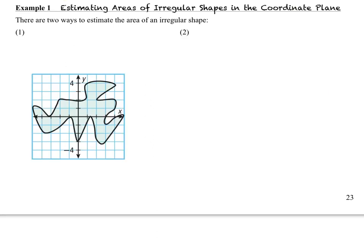In example number 1, we're trying to estimate the area of an irregular shape in the coordinate plane. And you can see that we've got this very odd-looking shape and what we want to be able to do is to figure out what the area is of that very irregular shape using the fact that it's on a coordinate plane to help us out. So one of the things that we could do is count boxes.